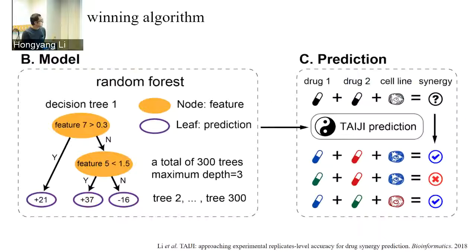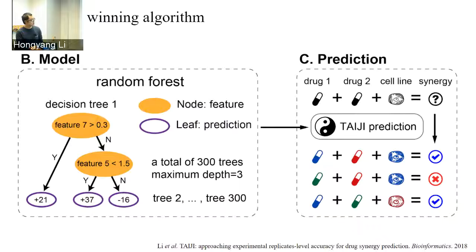After obtaining the post-treatment profile, it serves as unique input features for each drug. A random forest model — a tree-based model — takes these features, such as gene expression levels, and makes decisions at each node to predict the synergy score of a drug combination. Combining all three models gives the final prediction for new drug-drug combinations in unknown cell lines.